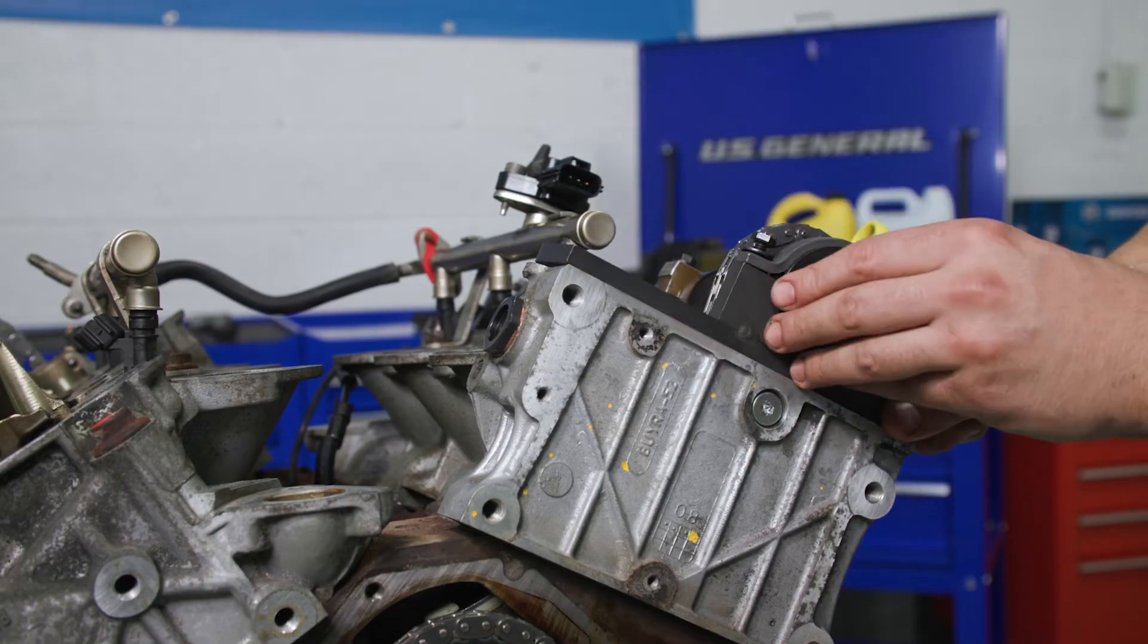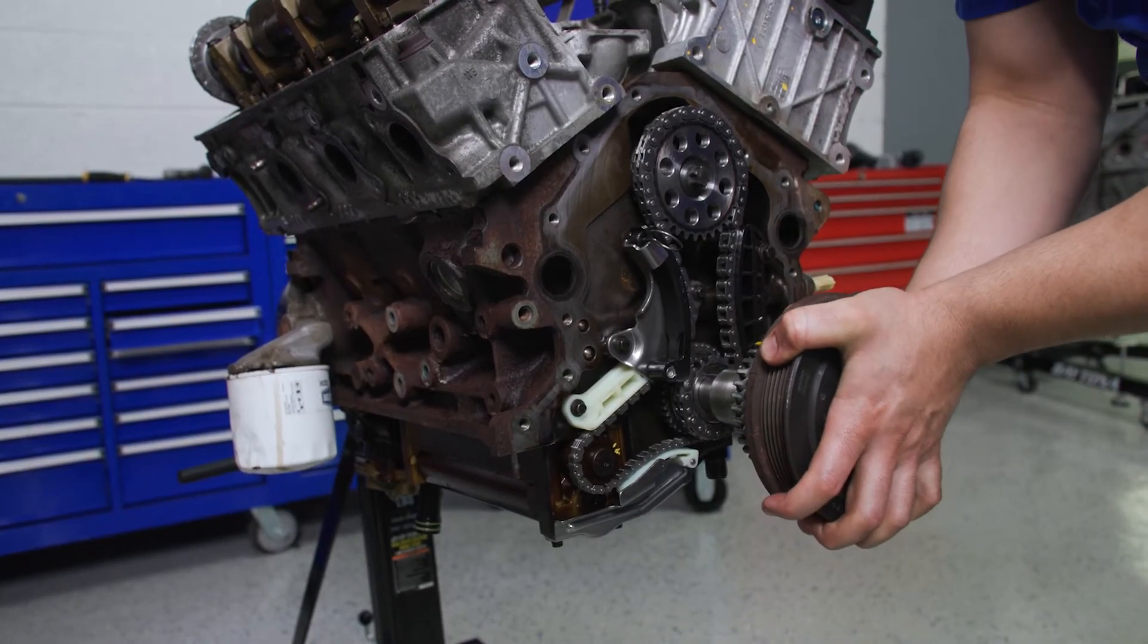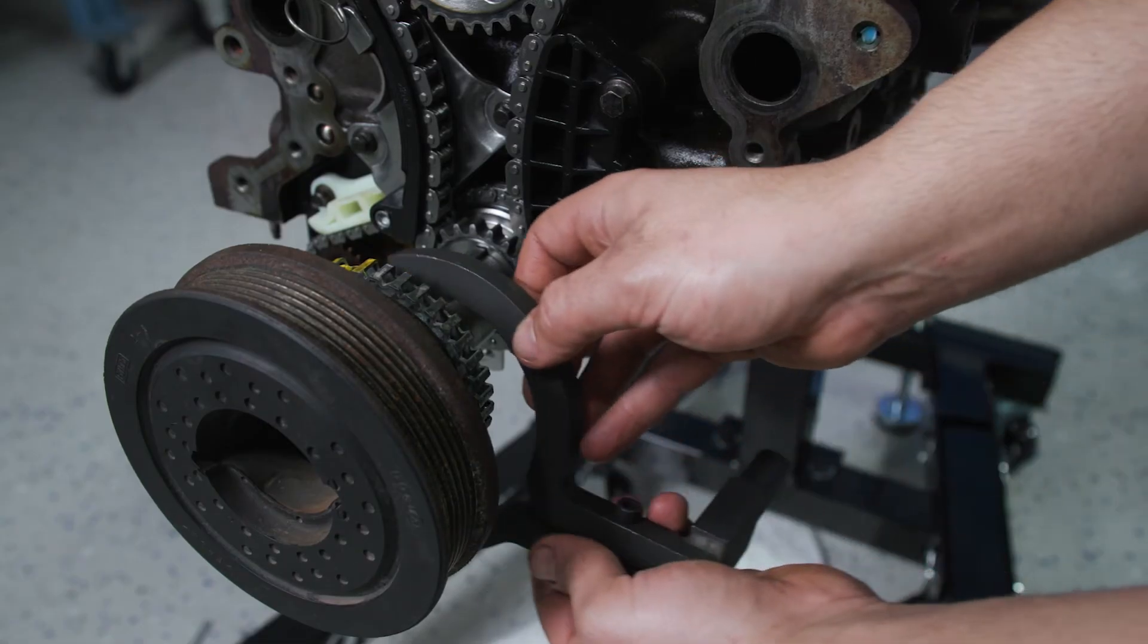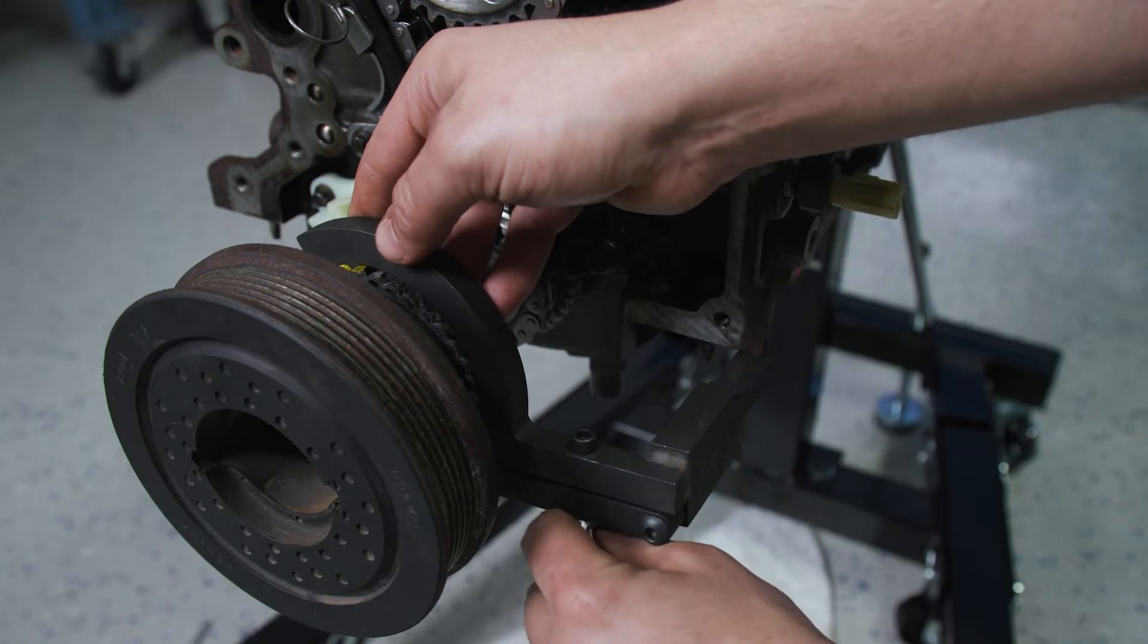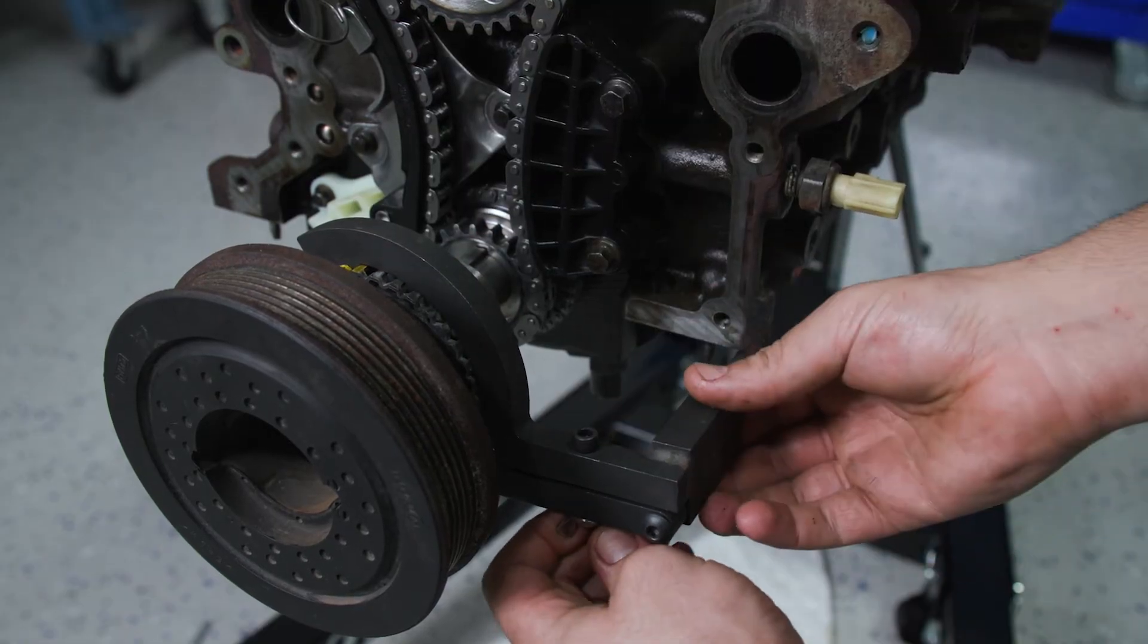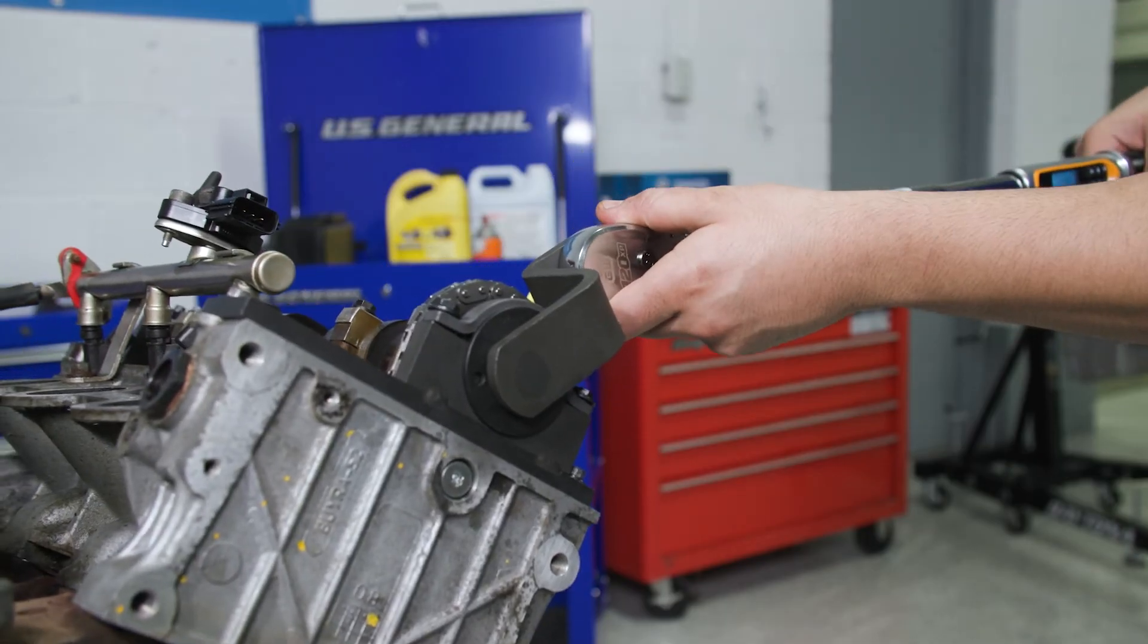Install the cam sprocket holding tool and tighten it down. Lightly tap the balancer into place and reinstall the top dead center holding tool. Double check the balance shaft timing marks to be sure they're lined up. Once confirmed, tighten the left side cam bolt to 63 foot-pounds.